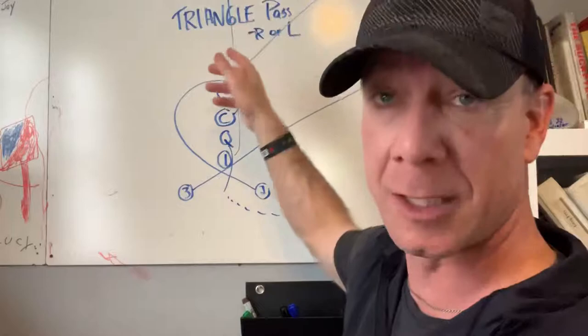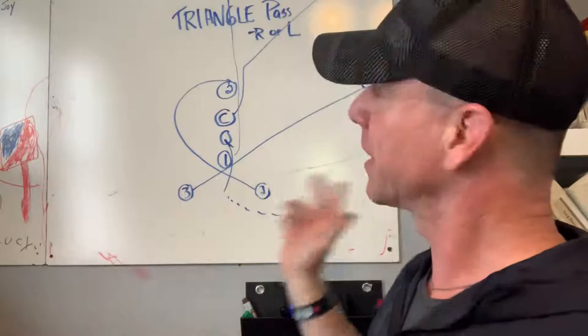When the quarterback avoids the blitz, somebody's open and we got to catch the ball. We got a big play on. So that's triangle pass right.